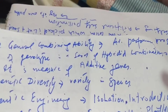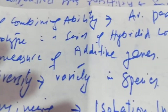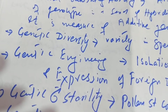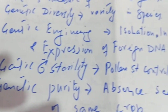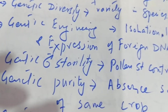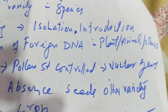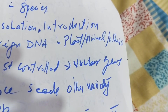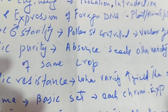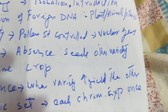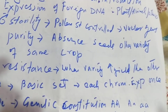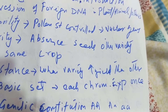Gene pool is the whole library of different alleles of a species, or the total genes of a species, also called germplasm genetic stock. General combining ability is the average performance of a genotype in a series of hybrid combinations; it is a measure of additive genes. Genetic diversity is the variation in species. Genetic engineering is the isolation, introduction, and expression of foreign DNA in plants, animals, or other organisms.